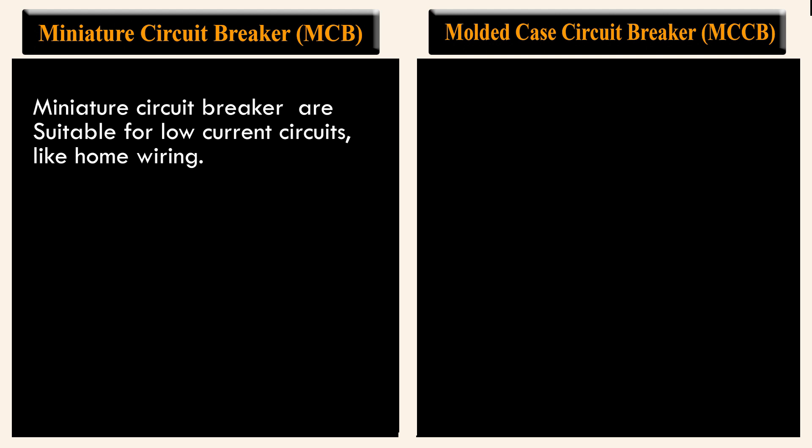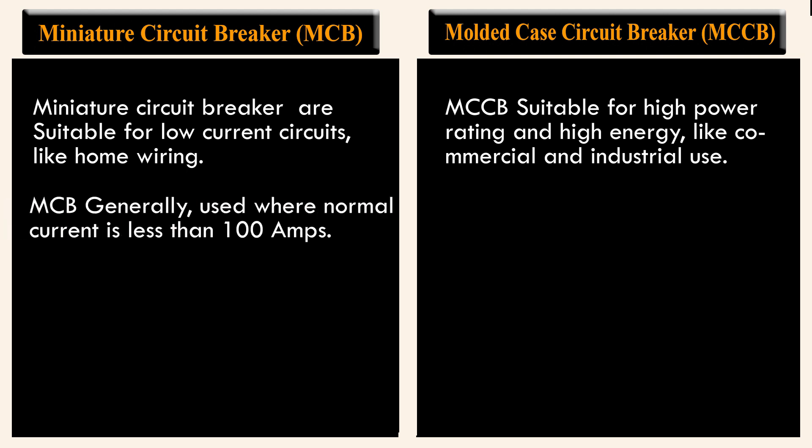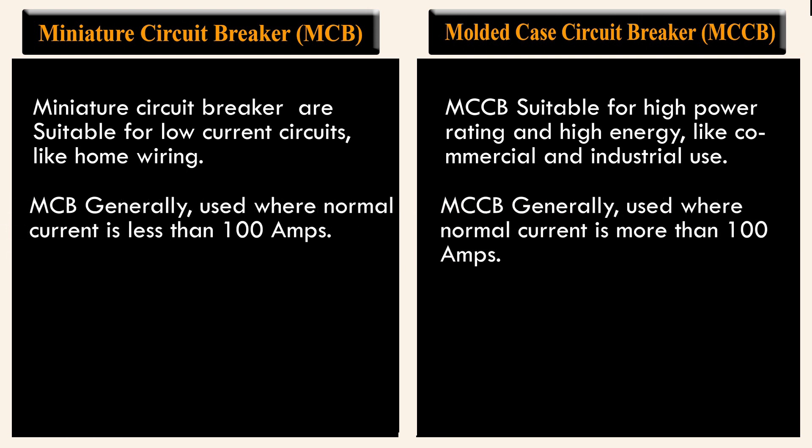Miniature circuit breakers are suitable for low current circuits like home wiring. MCCB is suitable for high power rating and high energy applications like commercial and industrial use. MCB is generally used where normal current is less than 100 amps. MCCB is generally used where normal current is more than 100 amps.